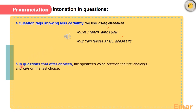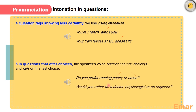The last case, number five: in questions that offer choices, the speaker's voice rises on the first choice and falls on the last choice. 'Do you prefer reading poetry or prose?' 'Would you rather be a doctor, psychologist, or an engineer?' Notice here we have options or choices, so the intonation rises on the first option then falls on the last option.